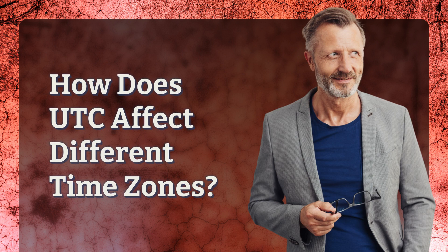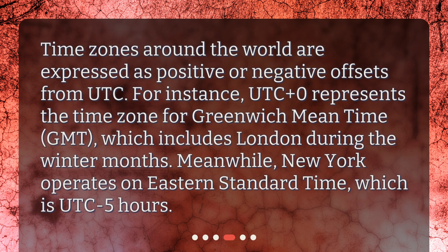How does UTC affect different time zones? Time zones around the world are expressed as positive or negative offsets from UTC. For instance, UTC+0 represents the time zone for Greenwich Mean Time, GMT, which includes London during the winter months. Meanwhile, New York operates on Eastern Standard Time, which is UTC minus 5 hours.